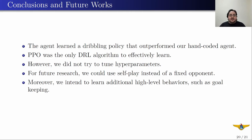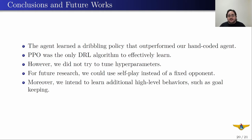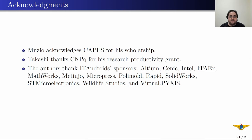About the conclusions: the agent learned a dribbling policy that outperforms our hard-coded agent. PPO was the only DRL algorithm to effectively learn; however, we must mention that we did not tune any hyperparameters, so probably with tuned hyperparameters DDPG and TRPO would also learn something on this task. For further research, we could use self-play instead of a fixed opponent, and we believe that with self-play we could achieve an even better policy. Moreover, we intend to learn additional high-level behaviors such as goalkeeping. Musil acknowledged CAPES for the scholarship, Takashi thanks CNPq for his research productivity grant, and the authors thank ITAndroids sponsors.